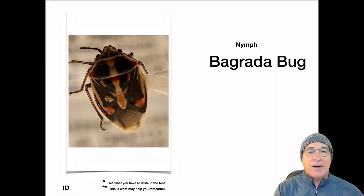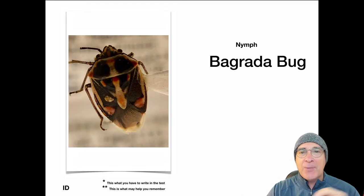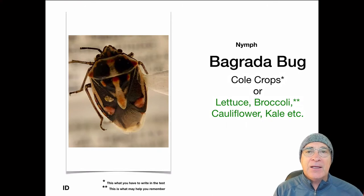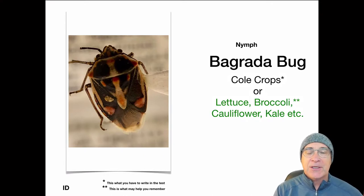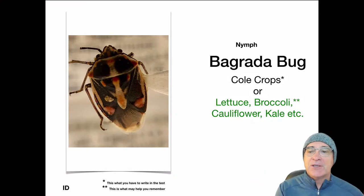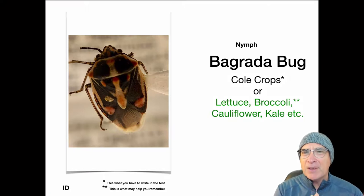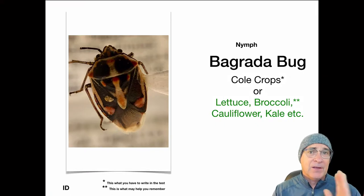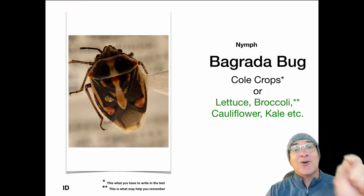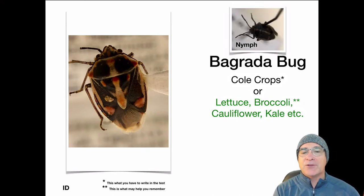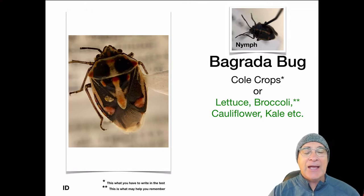This next one is the Bagrada bug. The Bagrada bug is shaped like a stink bug, but it has quite an incredible paint job — on black, it looks like spray-painted red or orange. The Bagrada bug's host is cole crops: lettuce, broccoli, cauliflower, and kale. But on the contest, all you have to write down is 'cole crops.' Cole crops are in the mustard family, Cruciferae. The nymph is also a strange-looking fellow — kind of flattened and roundish, like a penny with antennae.